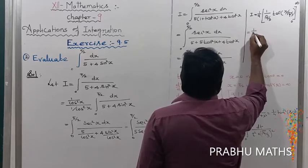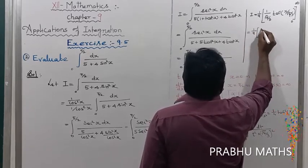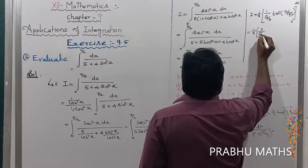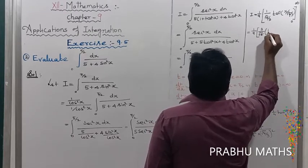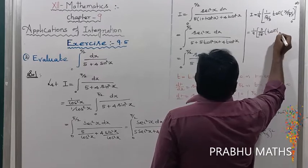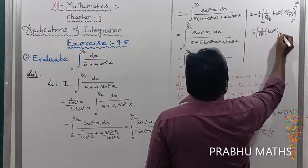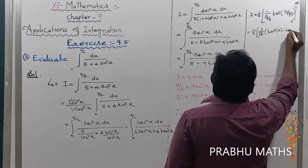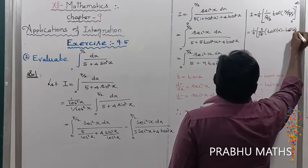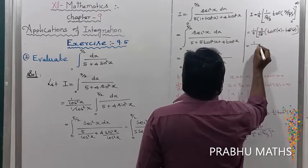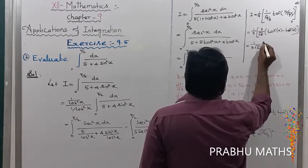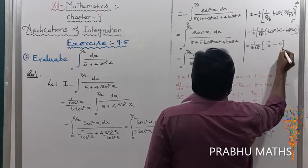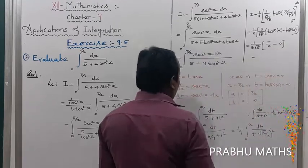So I equals (1/9) times (3/root 5) times [tan⁻¹(infinity) minus tan⁻¹(0)], which equals (1/(3 root 5)) times [pi/2 minus 0], giving pi divided by 6 root 5.